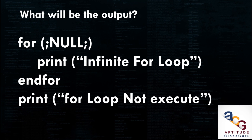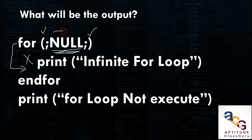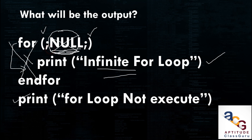What will be the output? A for loop with no initialization, null condition, and no increment/decrement. Since the condition is null, the for loop will not be executed even once. The output is: for loop not executed. Note: if the null condition were absent, it would run infinitely.